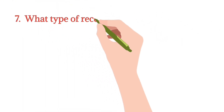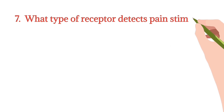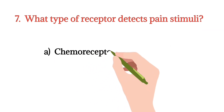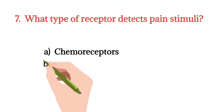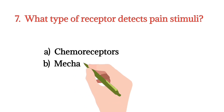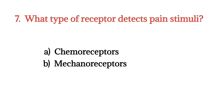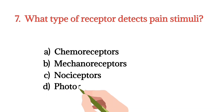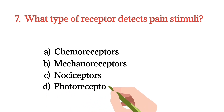MCQ number 7. What type of receptor detects pain stimuli? Option A: Chemoreceptor. Option B: Mechanoreceptor. Option C: Nociceptors. Option D: Photoreceptors. The right option is Option C.